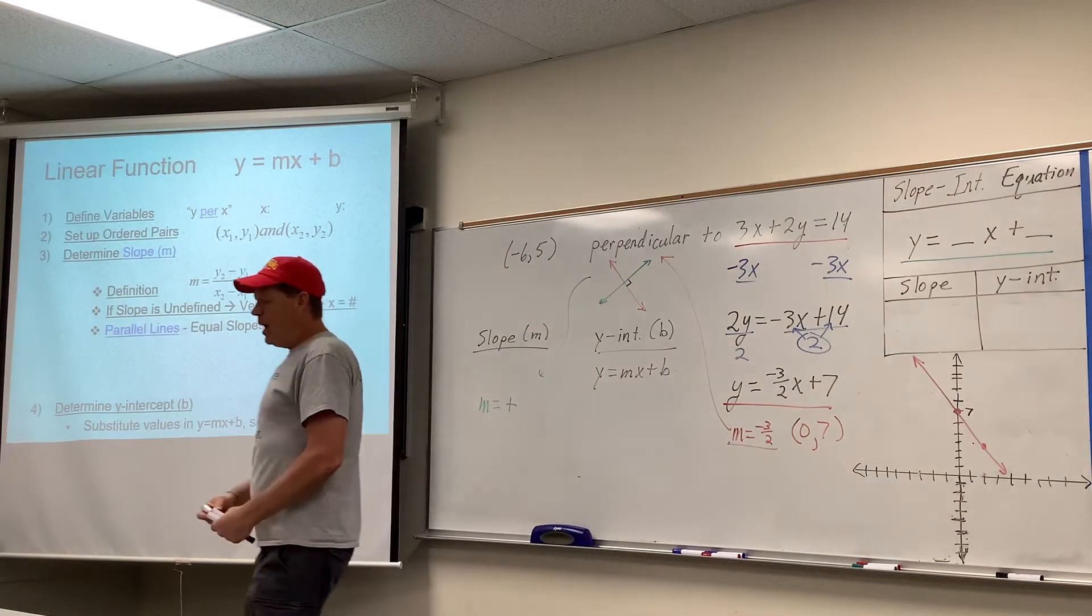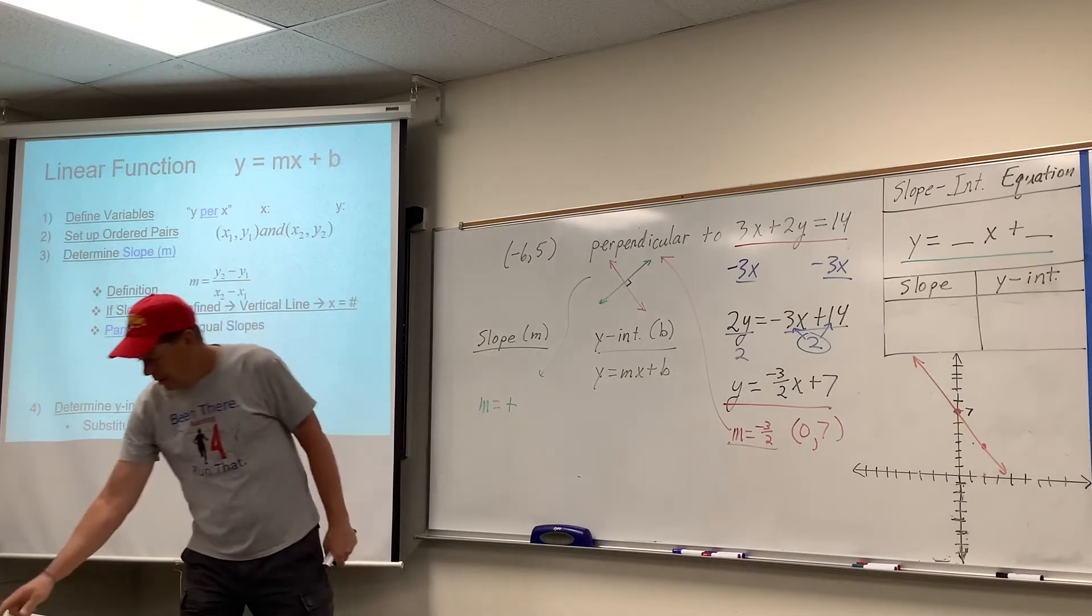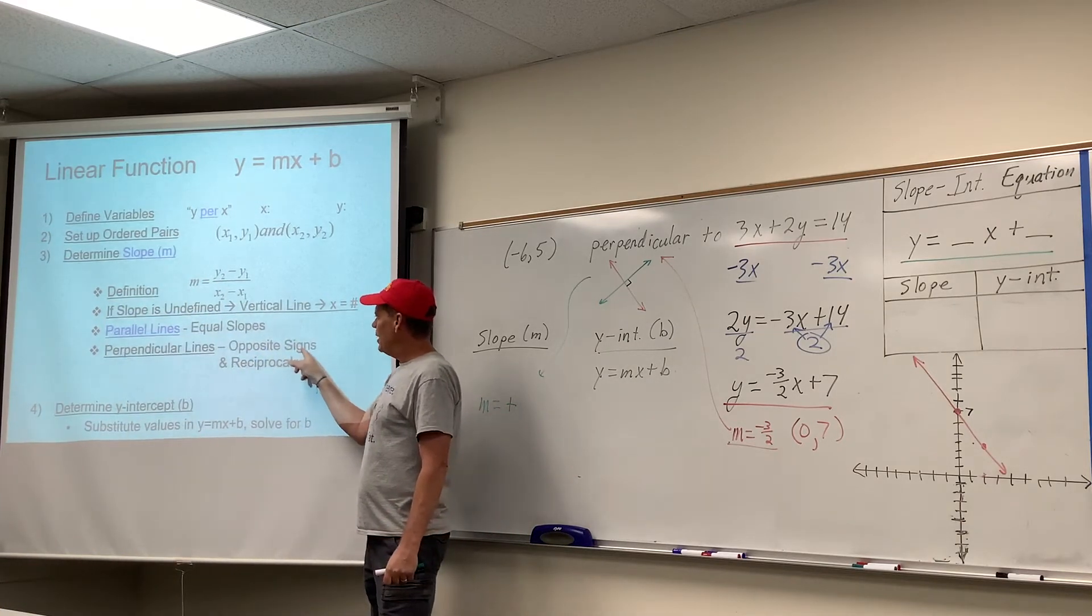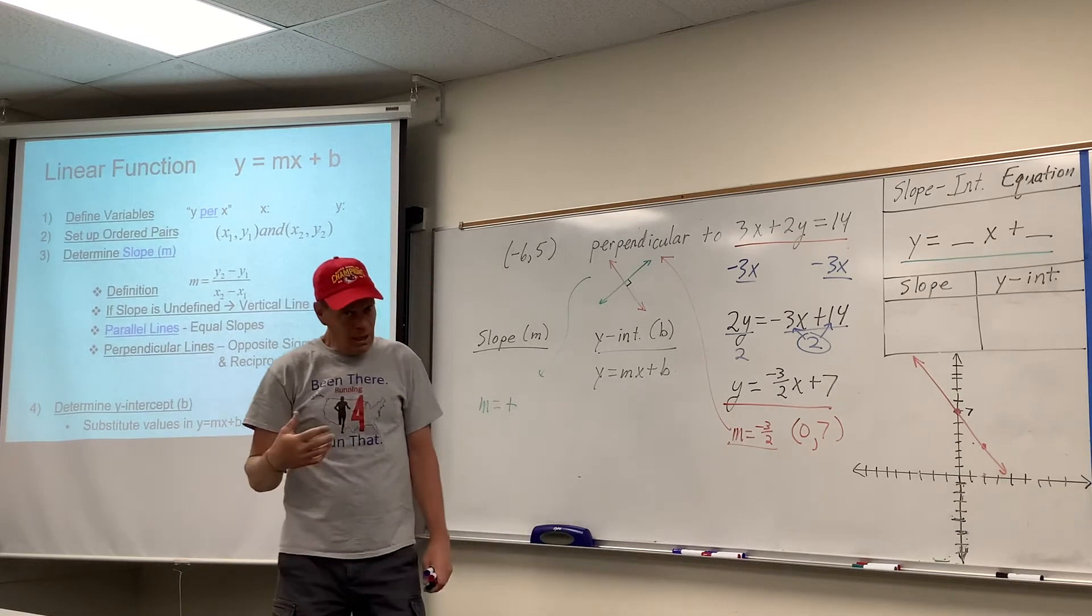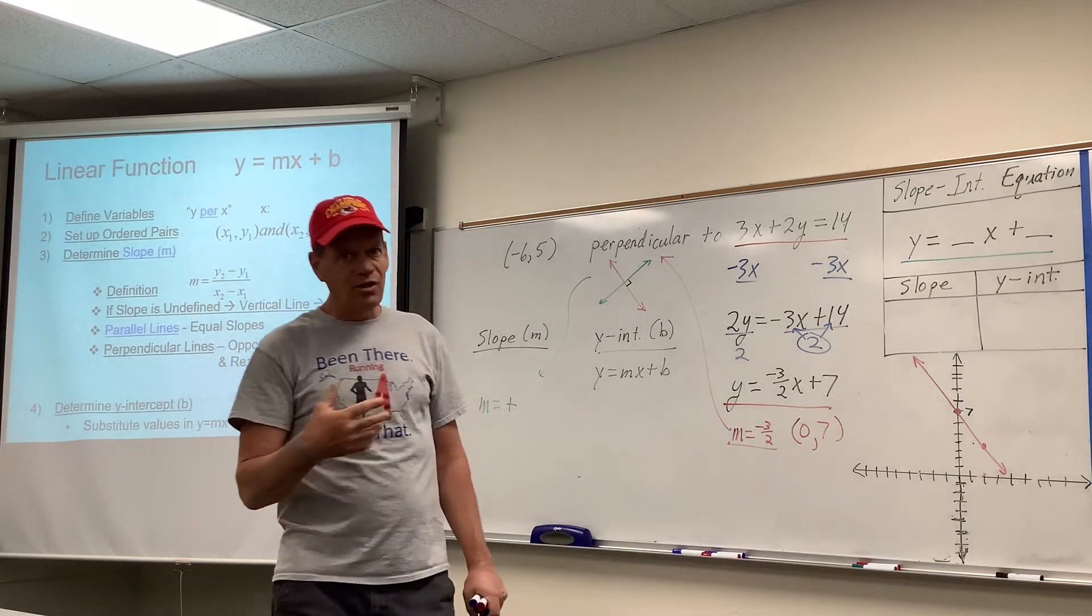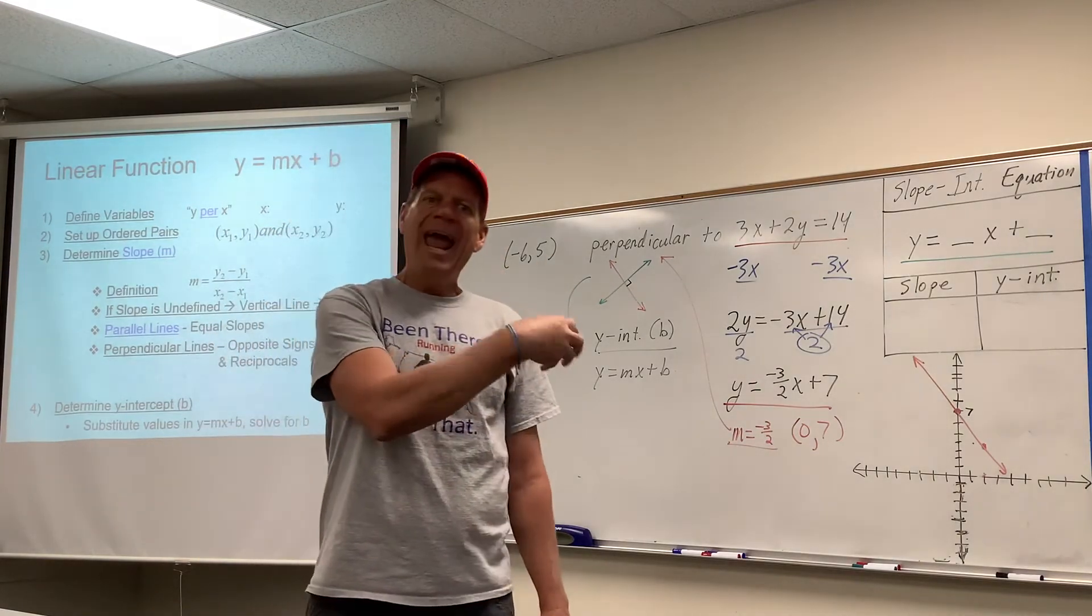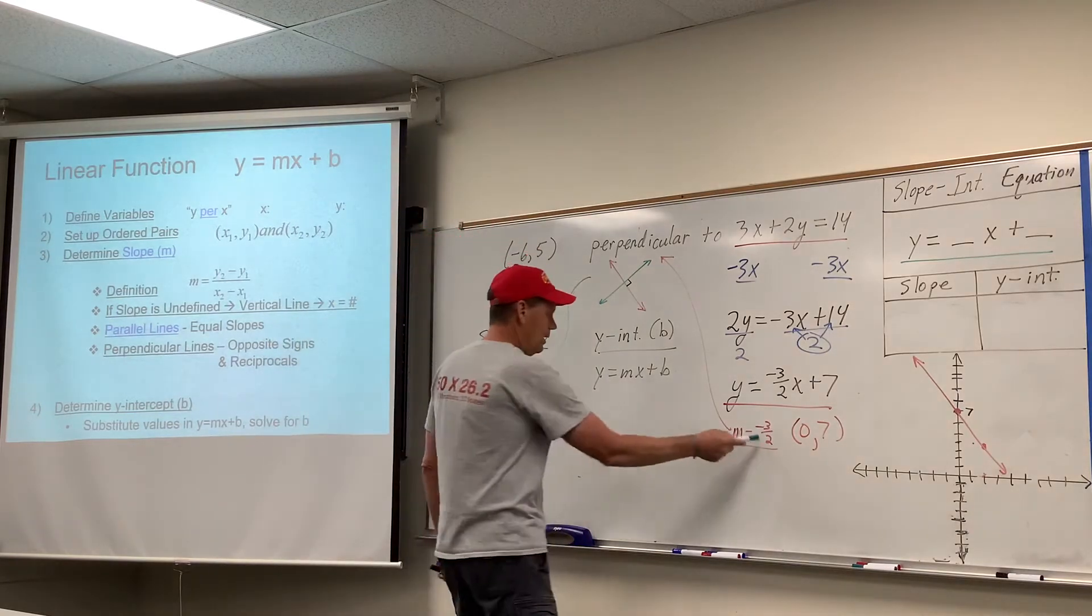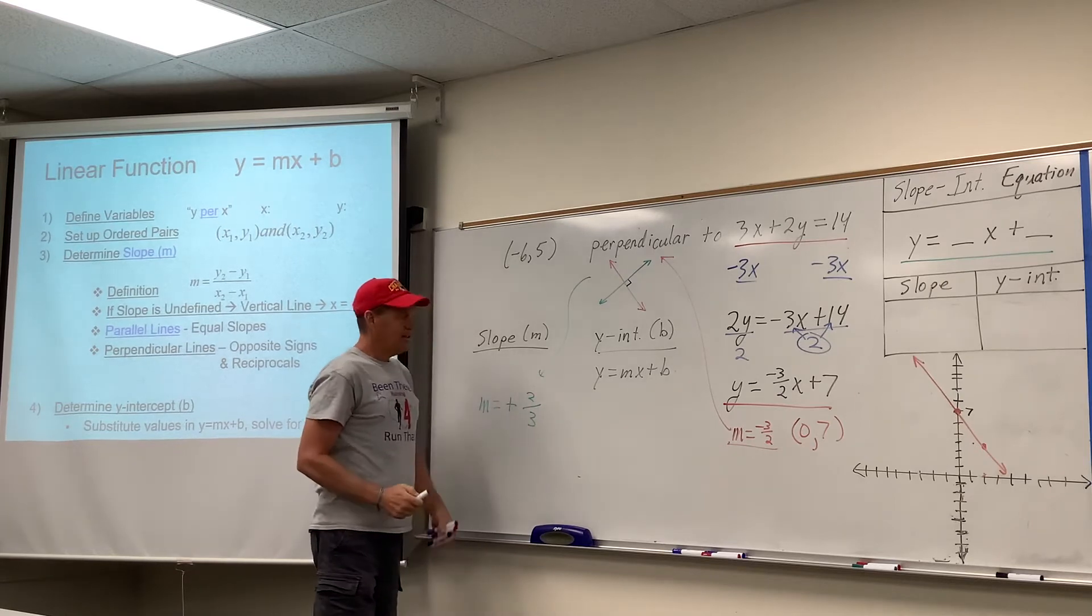You'll also notice, though, that not only do you change the sign to make them perpendicular, but math, smart math people figured out that not only do they have to be opposite signs, but they also have to be reciprocals of each other. So when the two lines are supposed to be perpendicular, you change the sign and flip it over, basically. So the reciprocal of that would be 2/3.